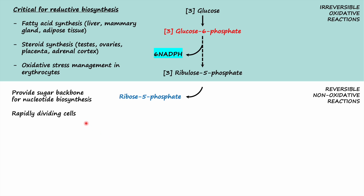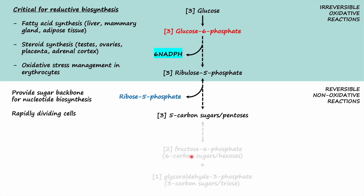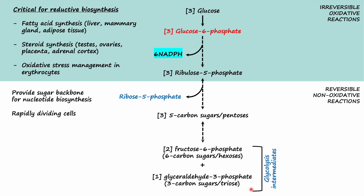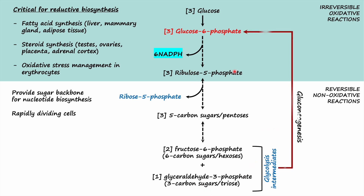Ribose 5-phosphate is needed for the synthesis of nucleotides to be incorporated into DNA and RNA. Alternatively, through a series of reactions, the pathway can also synthesize glycolysis intermediates such as fructose 6-phosphate and glyceraldehyde 3-phosphate. In cells carrying out reductive biosynthetic reactions with a greater demand for NADPH than ribose 5-phosphate, ribulose 5-phosphate is converted into fructose 6-phosphate and glyceraldehyde 3-phosphate, which are then recycled back to glucose 6-phosphate via gluconeogenesis to generate more NADPH.